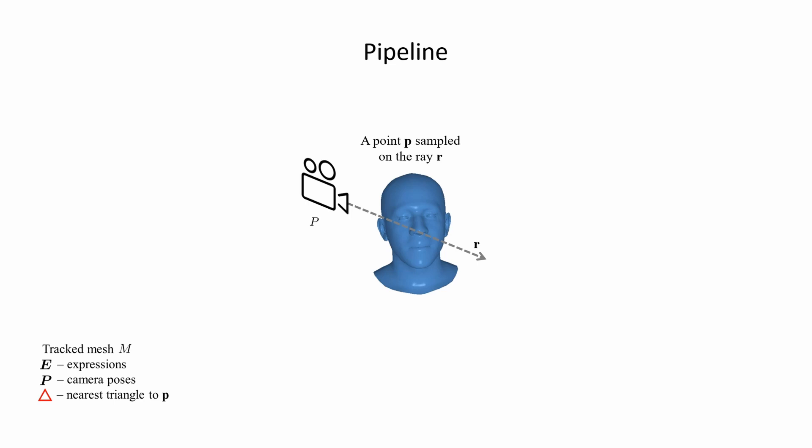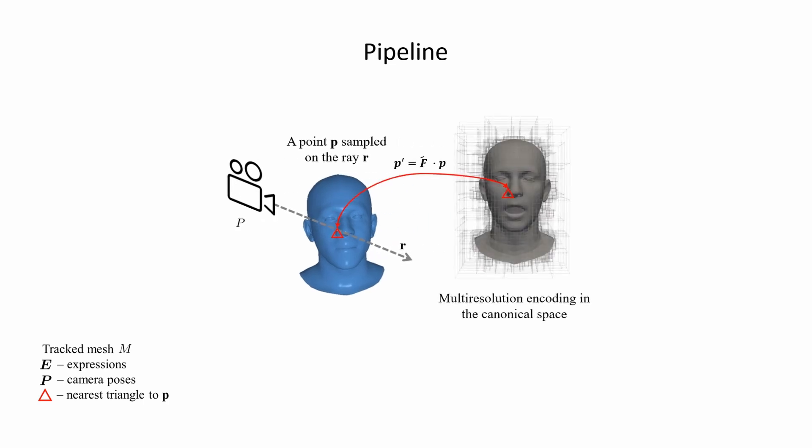Our pipeline is based on differentiable volumetric rendering. For every pixel, we shoot a ray using the estimated camera parameters p and sample points along the ray. As we represent the avatar in a canonical space, we have to transform the sample points from the observation space into the canonical space. To this end, we search for the closest triangle of the tracked mesh to estimate the deformation field f. We employ a GPU-based bounding volume hierarchy to ensure a fast nearest neighbor search. Based on the deformation gradient f, we warp the sample point p from the observation space to the canonical space, resulting in the point p prime.